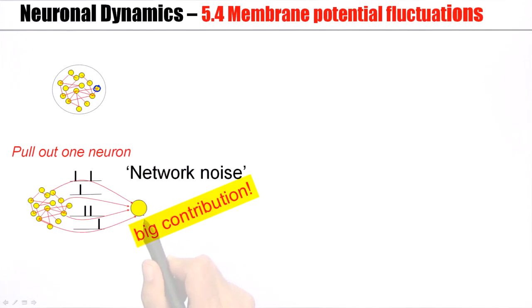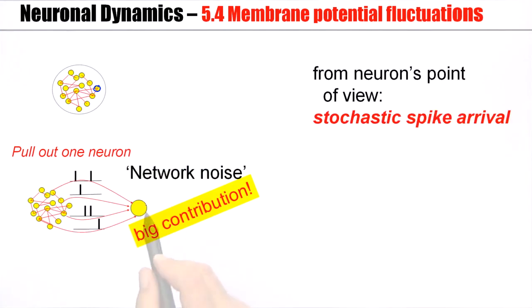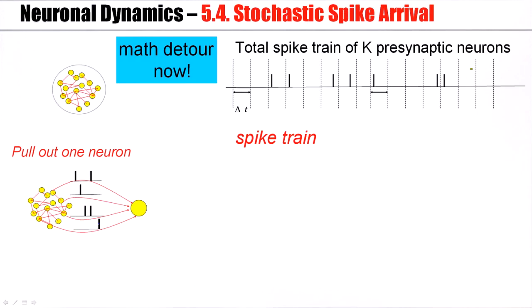Now from the point of view of this neuron, what this neuron sees are spikes, and the spike arrival looks stochastic. We consider the input to this one neuron. It's not a special neuron, it's an arbitrary neuron of the network, but for us it's special because we look at its input. Now here's the spike train that this neuron may see, the total spike train arising from K presynaptic neurons.